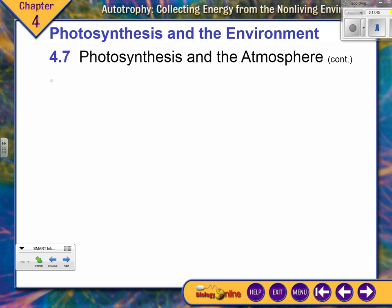The photosynthesis we're going to learn is based on making a half-glucose — a carbon-three molecule. But I want you to know that other types of photosynthesis exist: C4 photosynthesis, which makes a carbon-four chain, and the CAM pathway, which is well-adapted for desert environments. We don't need to go deep into these, but be aware they exist.